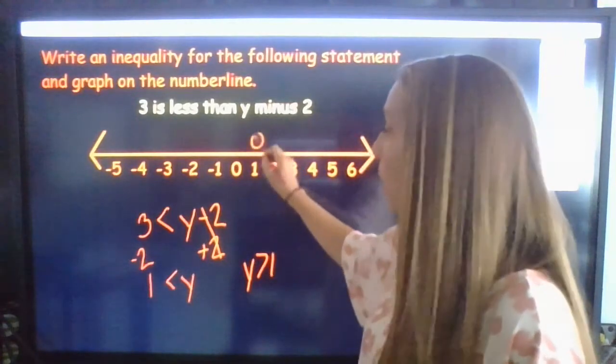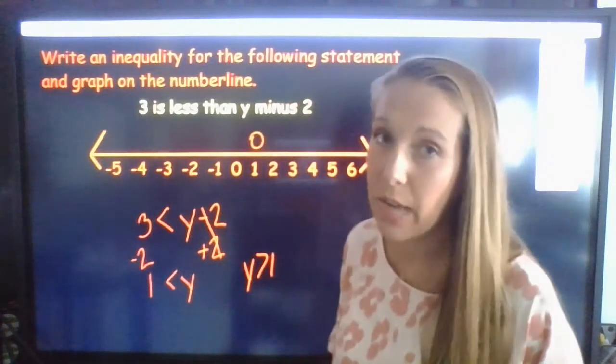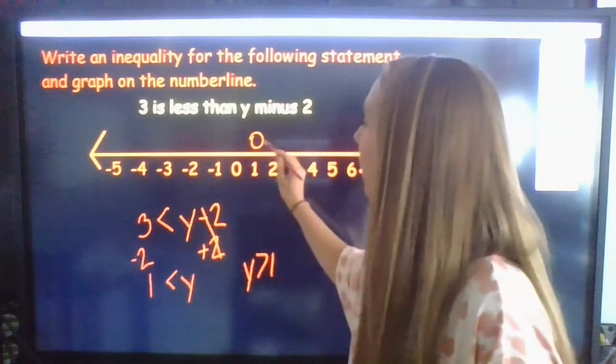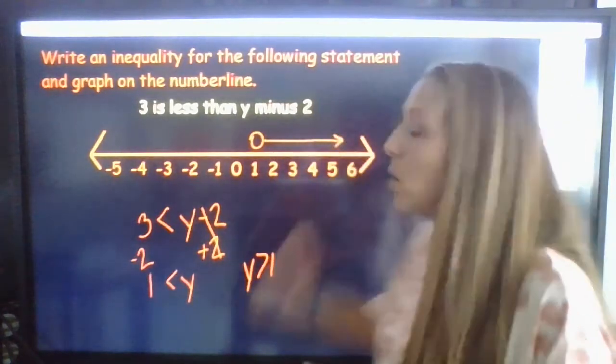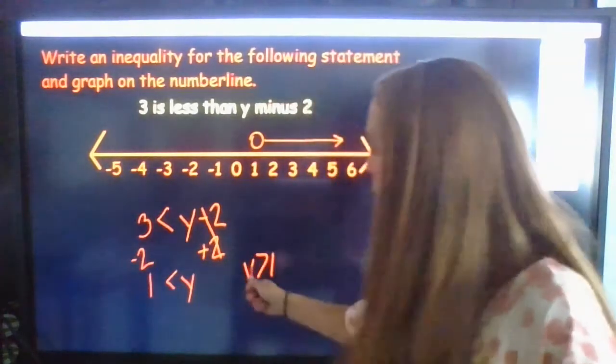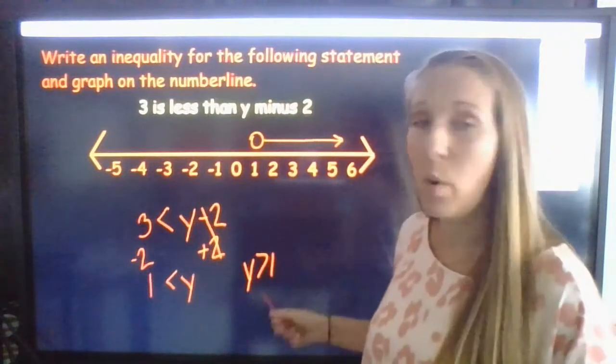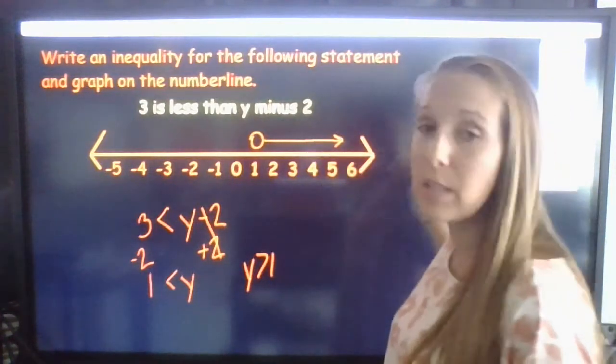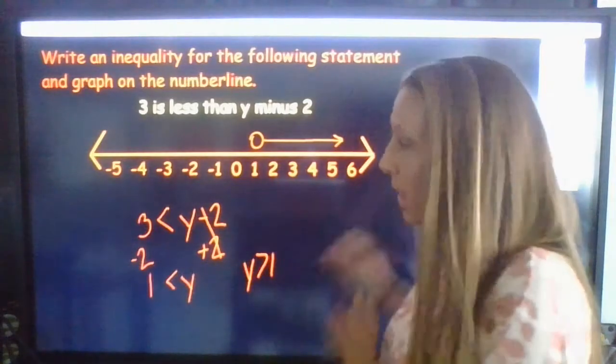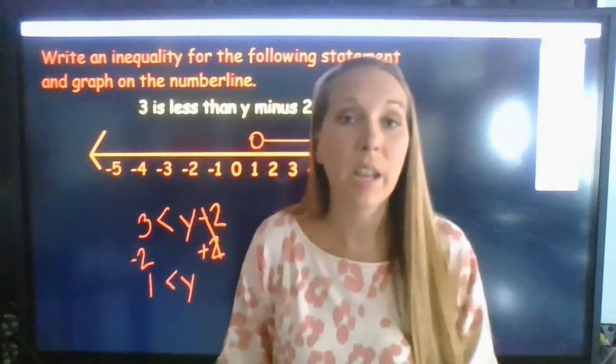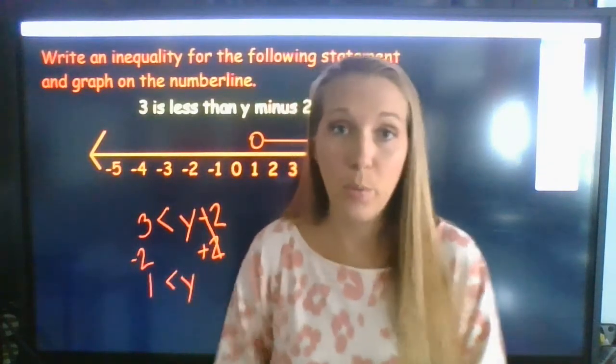So we're going to go to 1, open circle, because there's no equal to sign underneath these inequalities, and we're going to go to the right, which should make sense to us, because y has got to be bigger than 1. So that can be 2, 3, 4, 5, 6, a million. It does not matter as long as it's greater than 1. In this scenario, it just cannot be equal to 1.